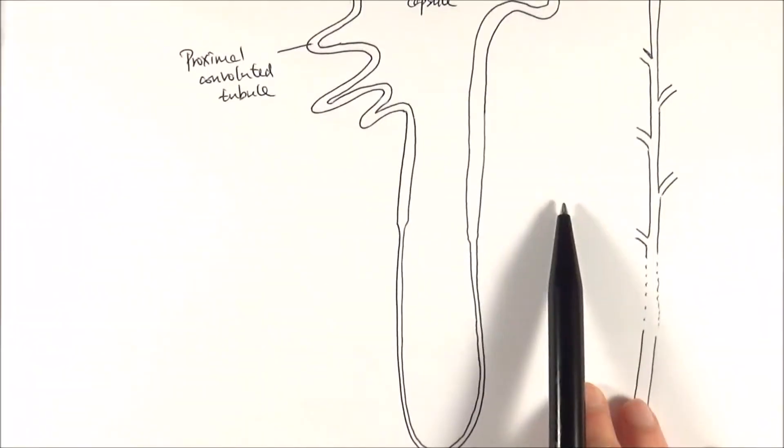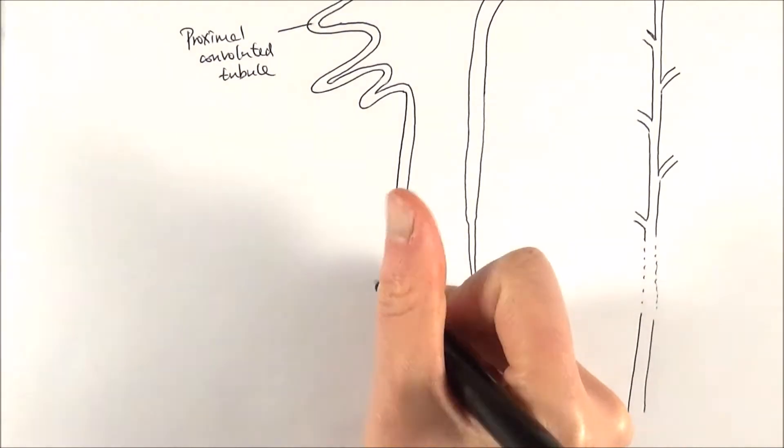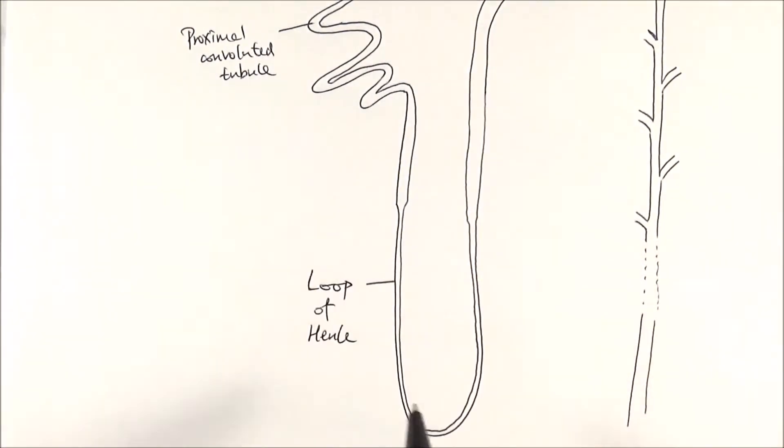And then it enters this other structure here, and this is a massive loop which we call the loop of Henle. In this loop of Henle, lots of water and salt reabsorption occurs.